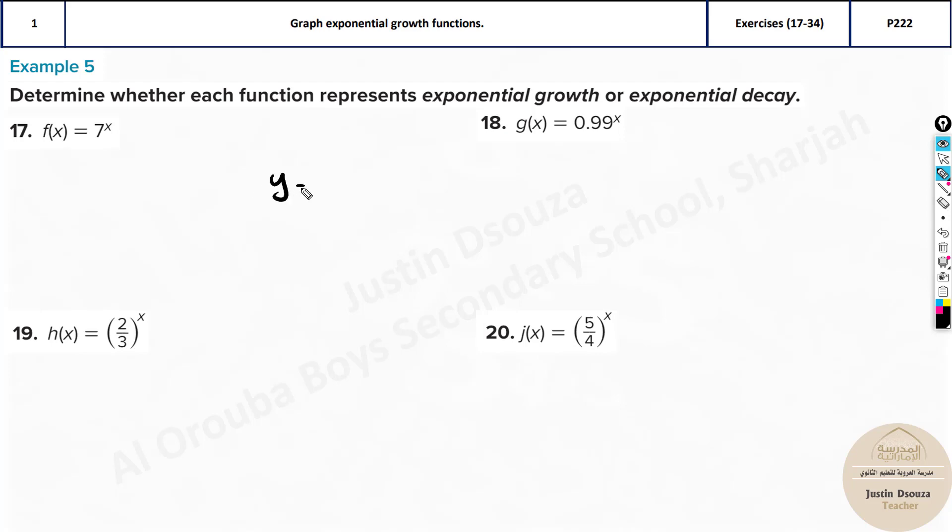It's generally given as y equals a b to the power x. Remember, this is a constant term, it's a number, it can be any number, less than 0, greater than 0, depends on whatever is given. It cannot be x to the power some number, this is not exponential, this is a polynomial, a quadratic function. Whereas if you have a number to the power x, then that is exponential.